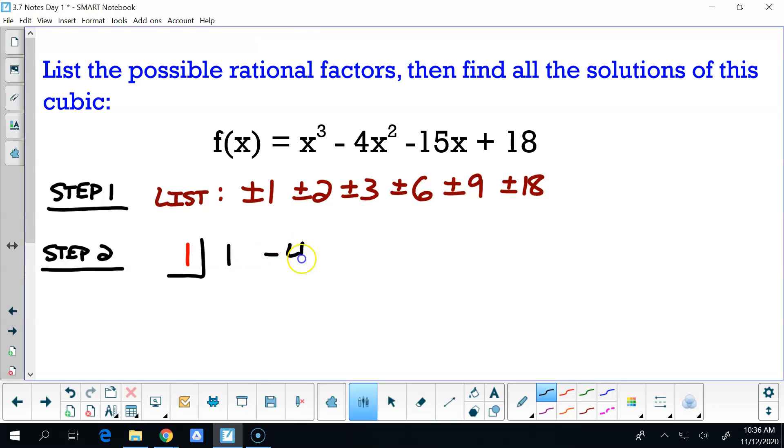One, negative four, negative 15, and 18. One, one, negative three, negative three, negative 18, negative 15. So one is zero.